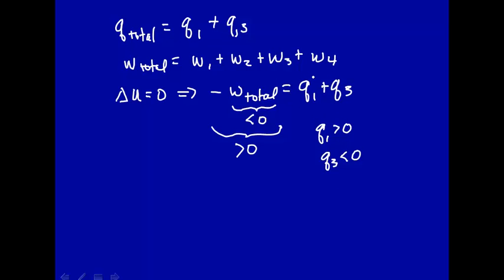In order to get this term greater than zero, Q1, the positive number, has to be bigger than Q3, the negative number. So this implies that Q1 is greater than Q3.